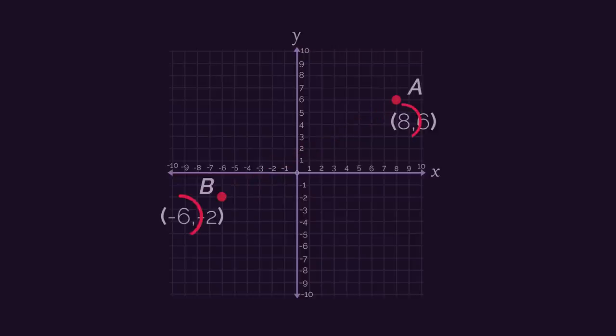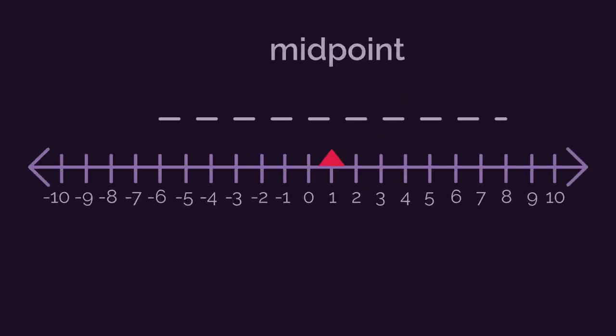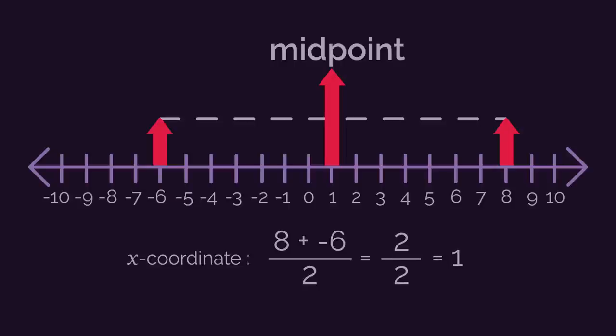We start by looking at the x-coordinates. What is halfway between 8 and negative 6? If you thought 1, you are correct. We just find the average of 8 and negative 6.